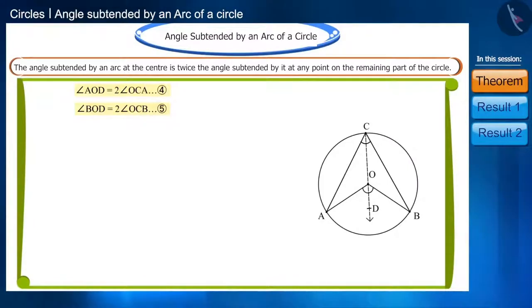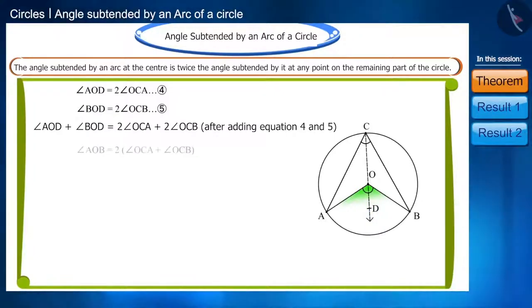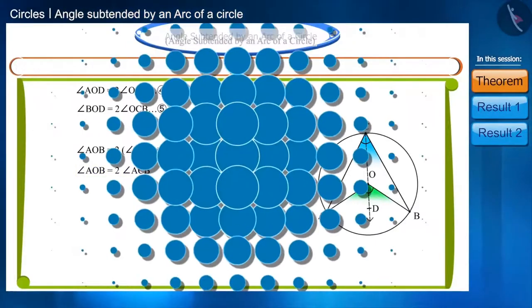Now adding equations 4 and 5, combining the angles AOD and BOD, we get angle AOB. By combining the angle OCA and the angle OCB, the angle ACB is obtained. You can see that the angle AOB is twice of angle ACB.